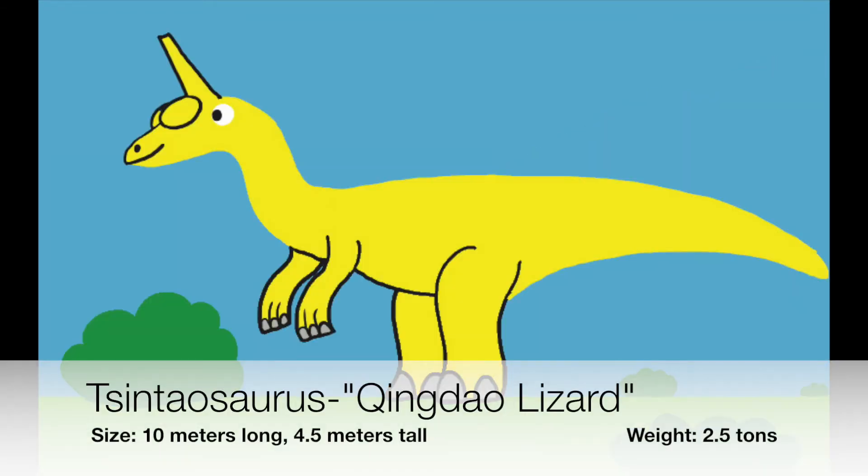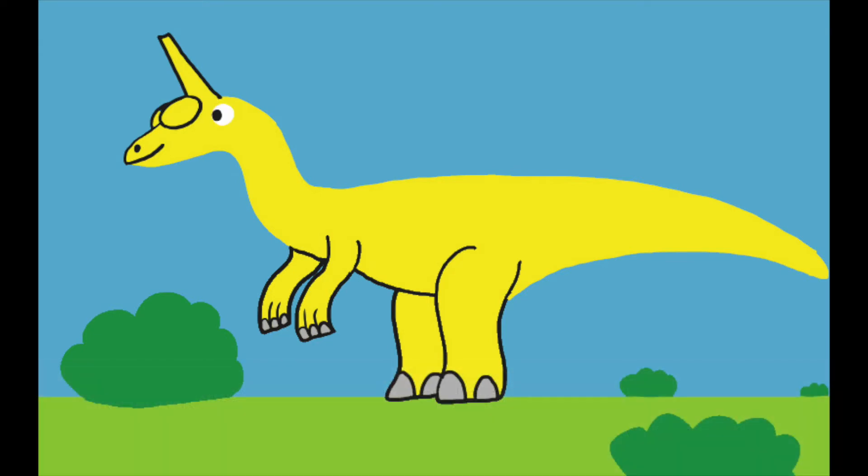Here we have an interesting member of the Hadrosaurids, called Cintosaurus. This is a very unique kind of dinosaur that God made because of the Cintosaurus' horn-like head crest. The crest makes him look like a dino unicorn. Like some Hadrosaurids, God made the Cintosaurus' head crest hollow to produce his species' own unique sound to communicate or to alert each other.